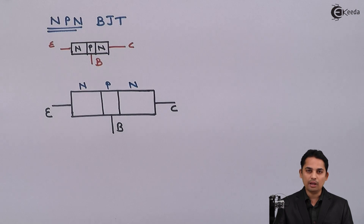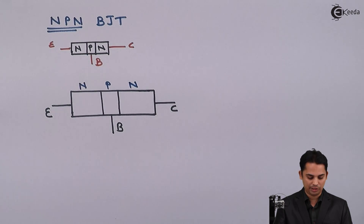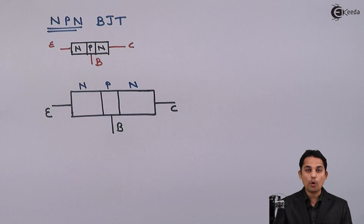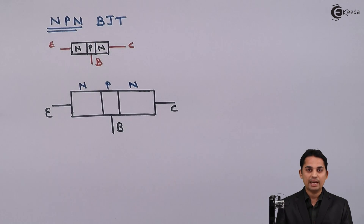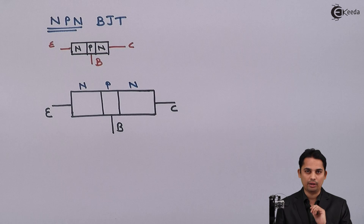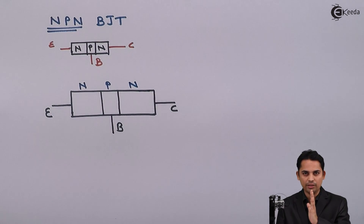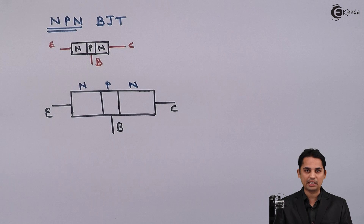Now we will see the doping levels of these three regions — collector, emitter, and base. The emitter has to provide electrons for the current, so it should have the maximum amount of doping, as it is giving electrons for conduction. The collector is collecting the carriers, so it is mediumly doped. Thus, emitter has maximum doping and collector has medium doping.